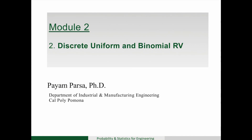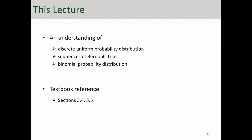Hello everyone and thanks for joining me. Here we want to continue module 2, second section, where we're going to talk about discrete uniform random variable and binomial random variable. We'll start with uniform probability distribution and then talk about Bernoulli trials, which leads us to binomial probability distribution. You can learn about these topics in the corresponding sections of the textbook.